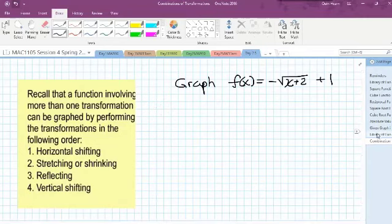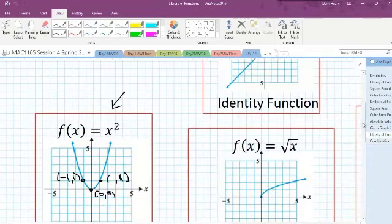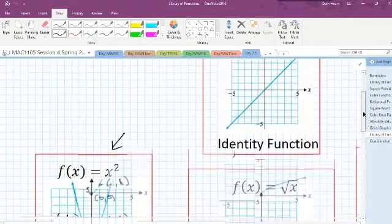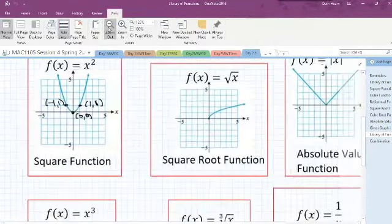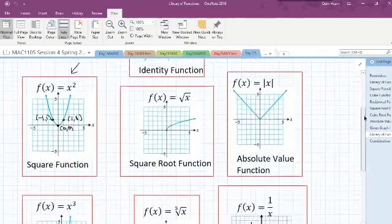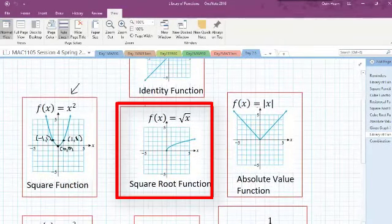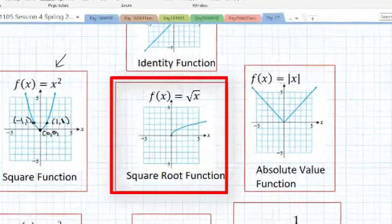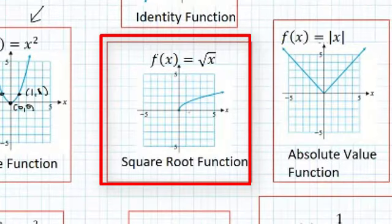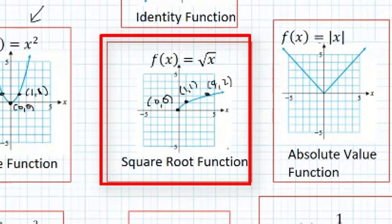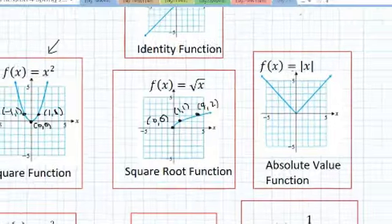From our library of functions, we have to decide which function we're shifting around. Our function has a square root in it, so we're shifting around the square root function. The square root function has a key point at (0, 0). Another easy one is (1, 1), since the square root of 1 is 1, and then (4, 2), since the square root of 4 is 2. So we're going to use the key points (0, 0), (1, 1), and (4, 2), and we're going to move those around with three transformations.